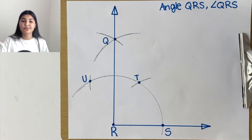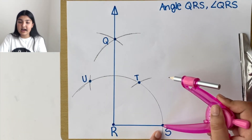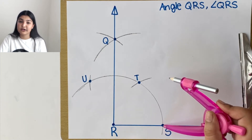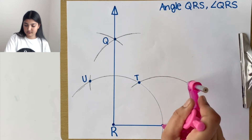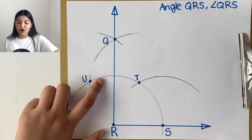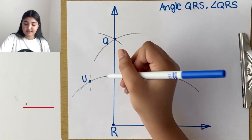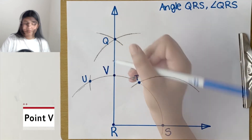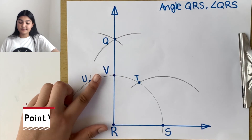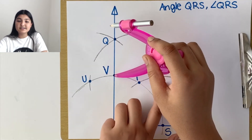Now that we've constructed a 90 degree angle, let's bisect it. To bisect an angle we use a compass. Place the leg of the compass on point S and make an arc. Make a point where this arc intersects the ray — label this point as V. Then place the leg of the compass on V and make another arc that intersects the first one.